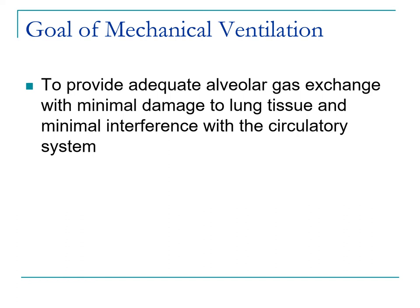We also need to minimize interference with circulatory systems through mean airway pressures. Because the thoracic cage expands with positive pressure ventilation, it can compress the vena cavae, reducing preload to the heart, reducing cardiac output, causing tachycardia and stressing the heart. That's why we have to alter vent management in certain patients, especially those with hemodynamic compromise.